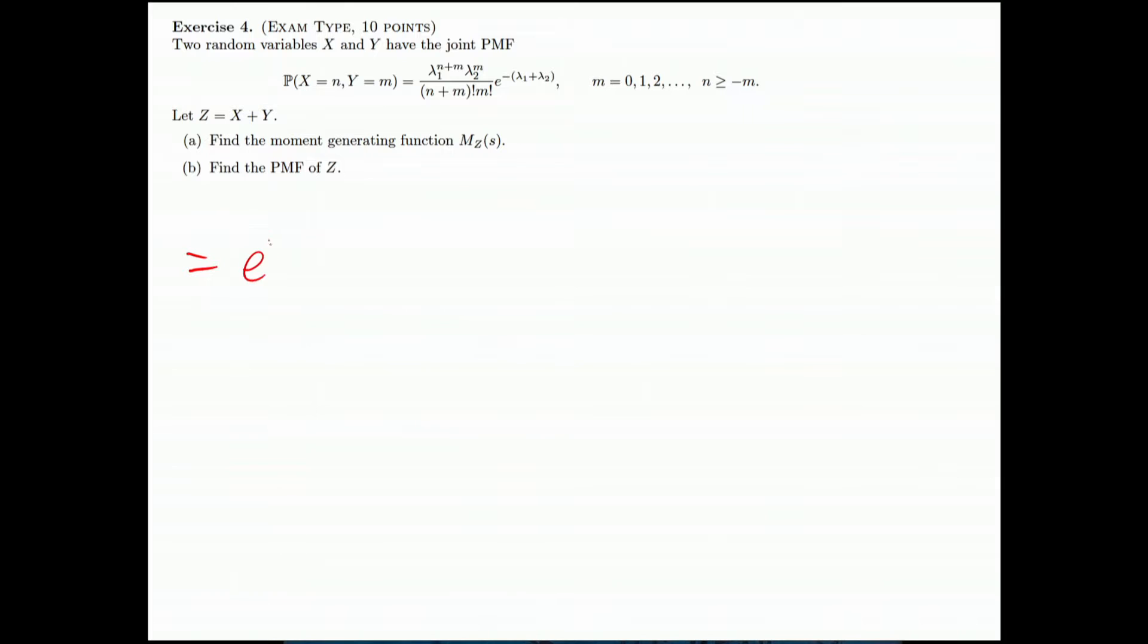Since exponential minus λ₁ plus λ₂ is irrelevant to the summation, I put that outside. Then I have m equals zero to infinity. Here I focus on k, so I put all relative to k into this summation, then λ₂ to the m and m! outside.